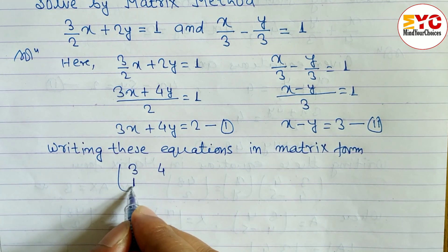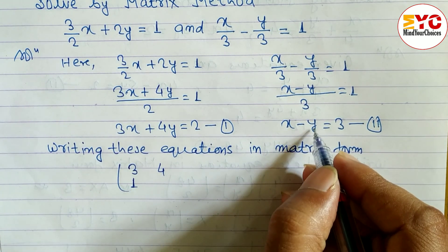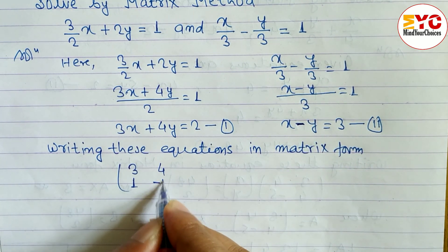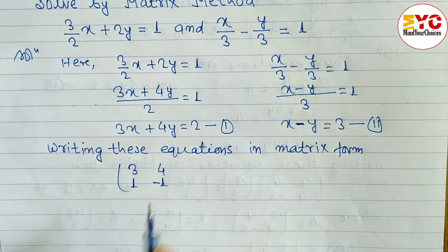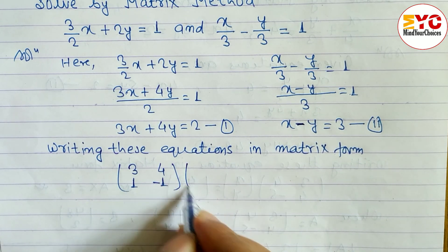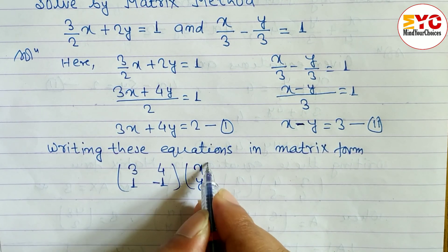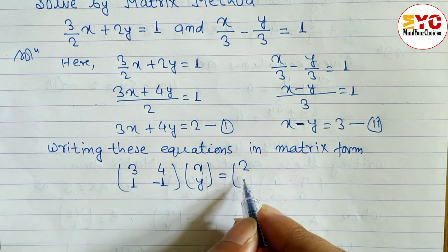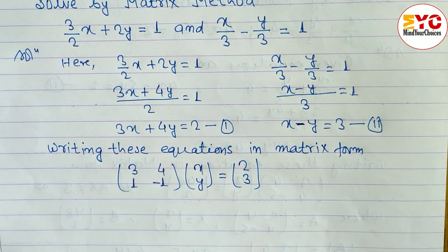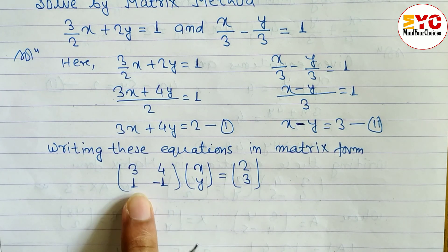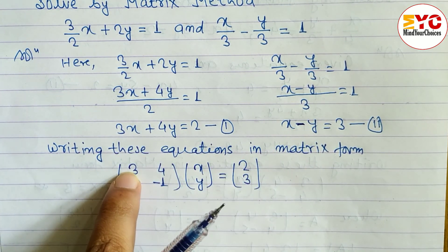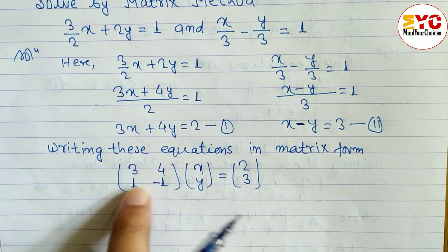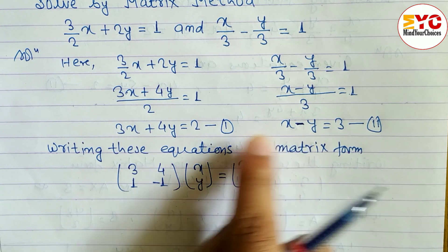From equation 2, the coefficient of x is 1 (nothing written means 1) and the coefficient of y is −1. So the second row is 1 and −1. We write the variable matrix as [x, y], and the constant matrix B as [2, 3]. When multiplied out, this gives back the same two equations: 3x + 4y = 2 and x − y = 3.